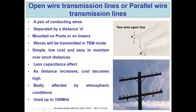These are a pair of conducting wires or conductors separated by a small distance d, having diameter a, and they are mounted on posts or towers. The waves are transmitted in transverse electromagnetic mode. They are simple, low cost, and easy to maintain over short distances. However, as the distance increases, the cost becomes very high — more posts need to be installed, more cable is needed, and maintenance and manpower both increase.